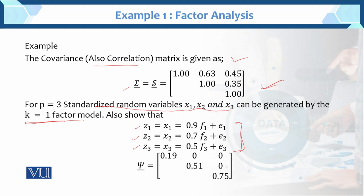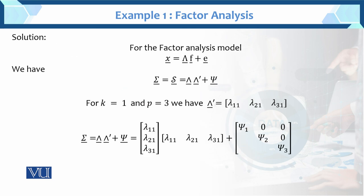We have the standardized random variables z1, z2, z3, and the error variance psi. We have to find these factor loadings. Here is the solution of example number 1 for the factor analysis model. For k equals to 1, we have a one-factor solution with 3 variables, so p equals to 3.